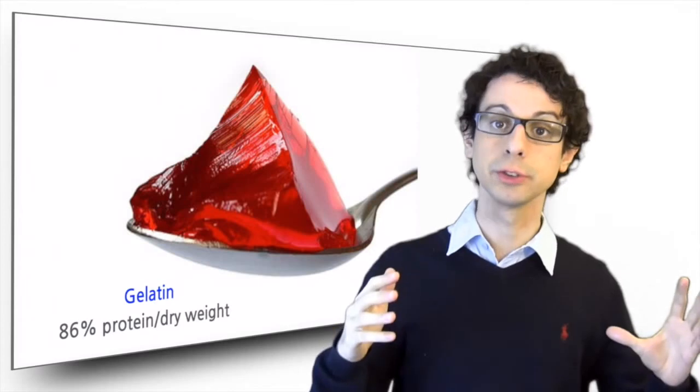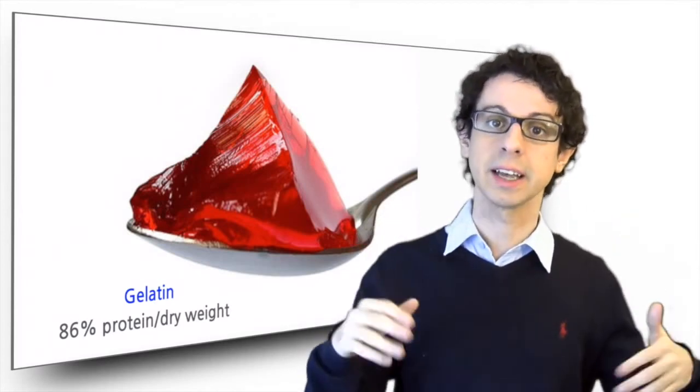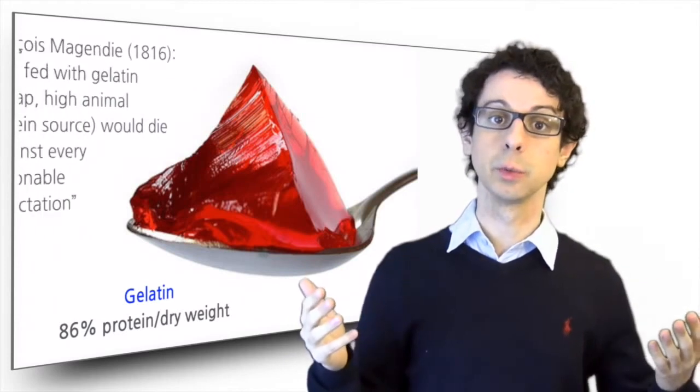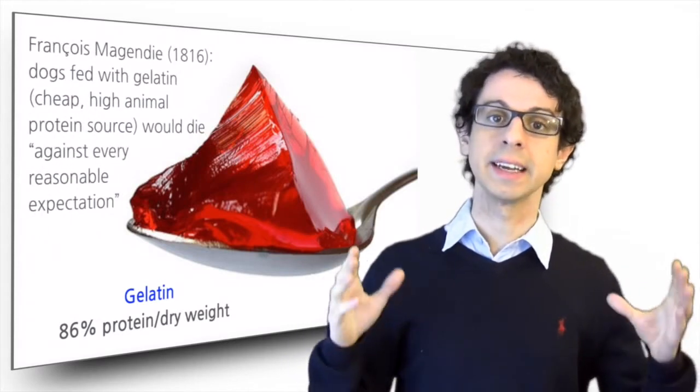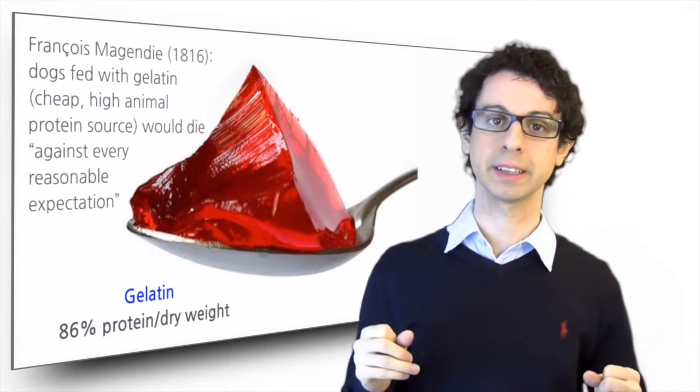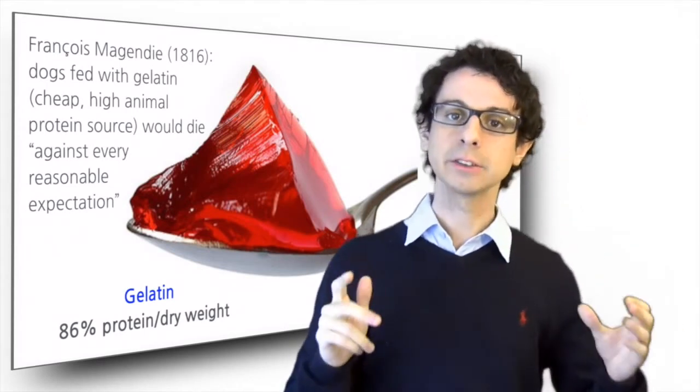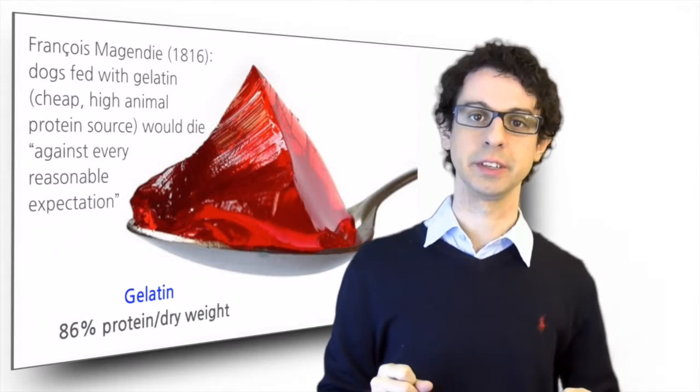So he took another group of dogs, fed them gelatin, expecting that they would thrive, and instead, to use his own words, they all died against every reasonable expectation. What was wrong? You will be able to answer this question at the end of this video.